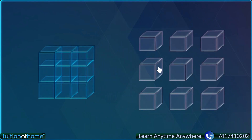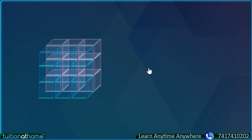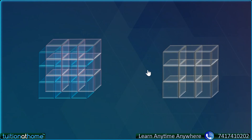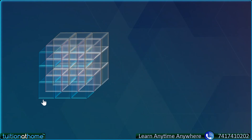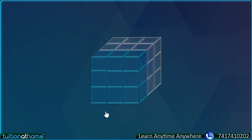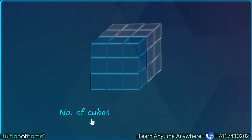Now let's have 9 more cubes and we will make a bigger cube, whose length, breadth and height is 1, 2, 3 — that is 3 cm, 3 cm, 3 cm. And how many cubes students? 9 plus 9 plus 9, that is 27. We can write this number of cubes as 3 into 3 into 3, which is nothing but 3 cube, and that is equal to 27.